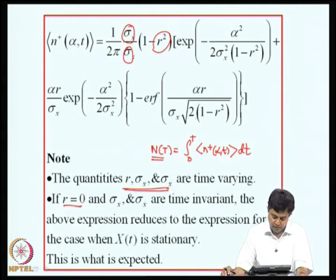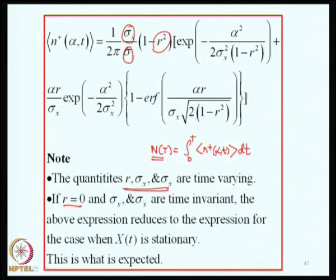With this, I will conclude this lecture. In the next lecture, we will consider development of approximate models for the number of times level alpha is crossed, and we will propose a Poisson model for this counting process and examine the ramifications of such models.